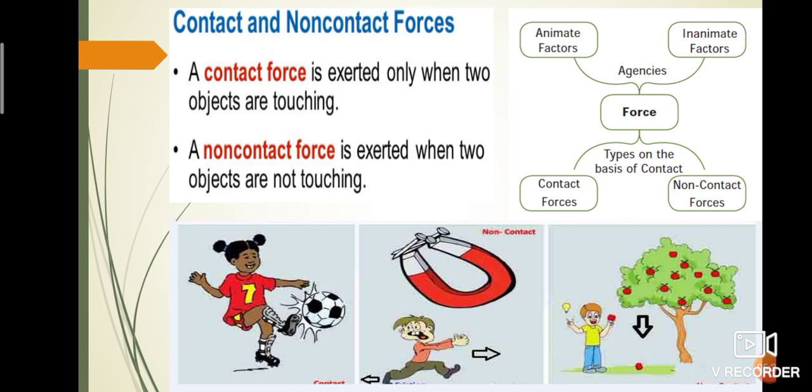What is contact force? The force is executed by touching the body is called contact force. What is non-contact force? The force is applied without touching the object. Shall we see some examples? A person kicks a ball means person touches the ball. So, it is a contact force. Magnet attracts an iron nail without touching the object. So, it is called non-contact force. Like that, ripe apple or any object falls to the ground due to gravity. So, magnetism and gravity are some examples of non-contact force.